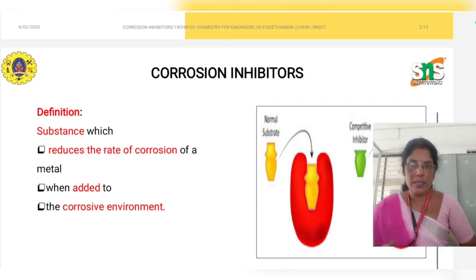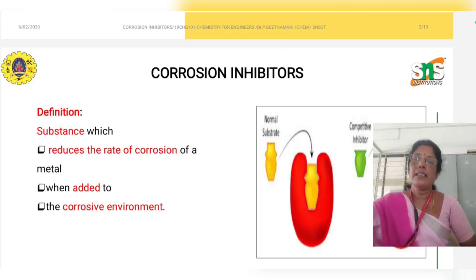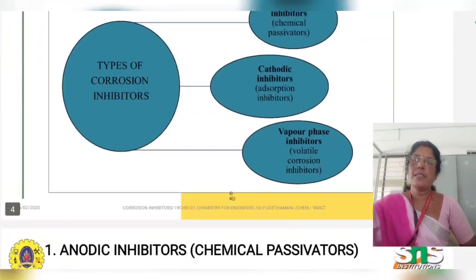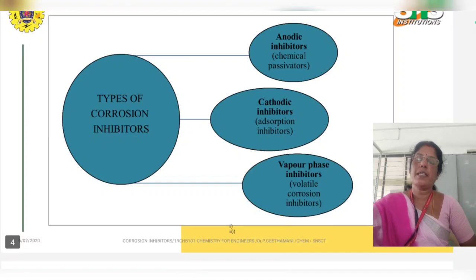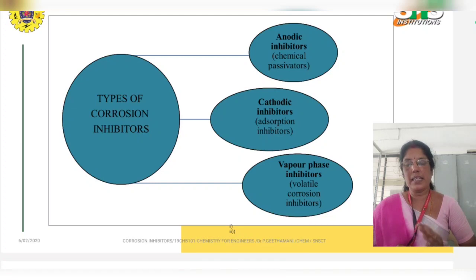So what are corrosion inhibitors? The substances which are used to reduce corrosion are called corrosion inhibitors. There are different types of corrosion inhibitors: anodic inhibitors, cathodic inhibitors, and vapor phase inhibitors. These are the three important types.